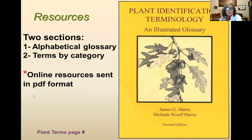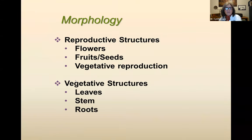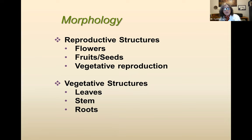There are a few places during the talk where I reference the page number in that book so you can follow along. When we talk about morphology, it's handy to divide it into a couple of groups: reproductive structures — things like flowers, fruits, seeds, and also vegetative reproduction like stolons and runners as on a strawberry — and then vegetative structures: leaves, stems, and roots. I don't get too much into roots simply because there's an awful lot to go over, and I'm trying to hit the highlights.